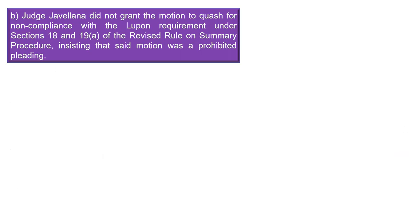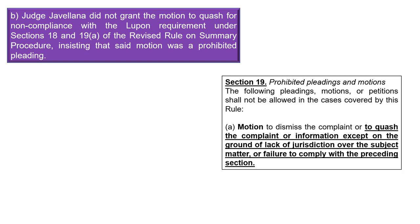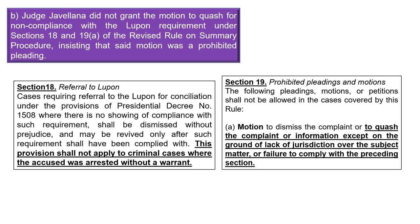Second issue: Judge Jabiliana did not grant the motion to quash for non-compliance with the barangay conciliation, claiming that motion is a prohibited pleading. Is Judge Jabiliana correct? Definitely no. According to Section 19, while a motion to quash is generally a prohibited motion, if the ground is failure to comply with barangay conciliation, that is an allowed exception. And according to Section 18, if there is failure to comply with barangay conciliation, the case shall be dismissed, but the dismissal is without prejudice — you can refile after the requirement has been complied with. However, this provision shall not apply to criminal cases where the accused was arrested without a warrant.